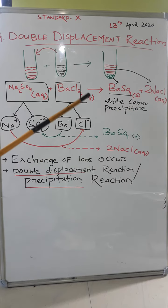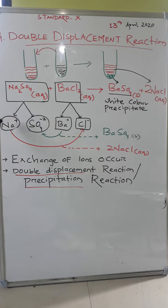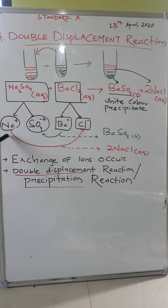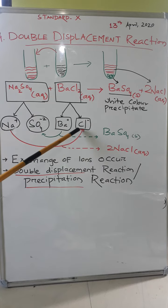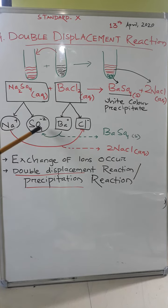Now let's see how this displacement reaction is taking place. When we prepare the aqueous solution of sodium sulfate, the sulfate dissociates and the sodium also dissociates into ions — Na⁺ and SO₄²⁻. Similarly, barium chloride dissociates into Ba²⁺ and Cl⁻ ions in water.